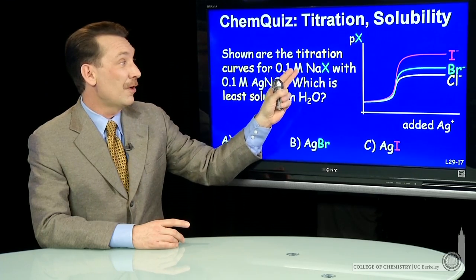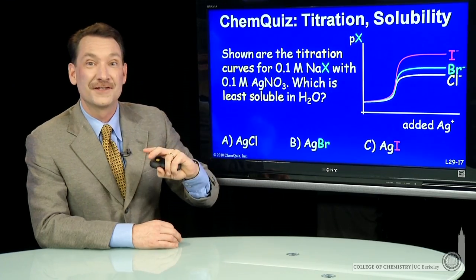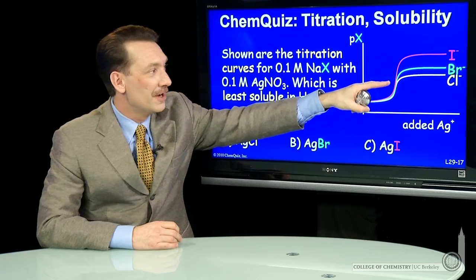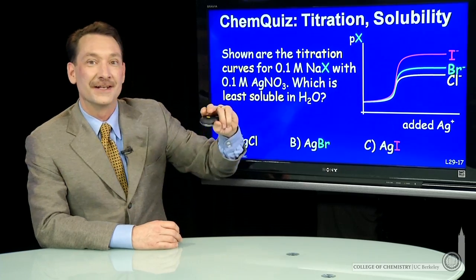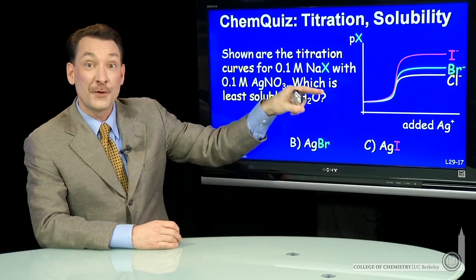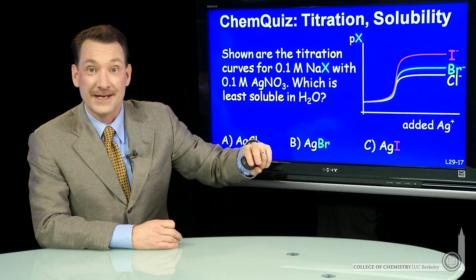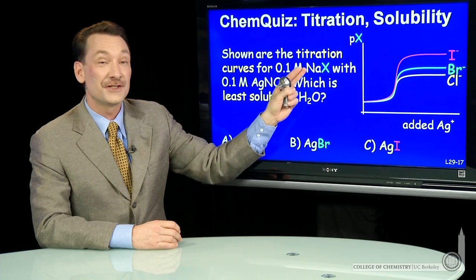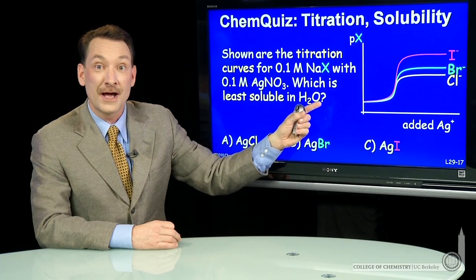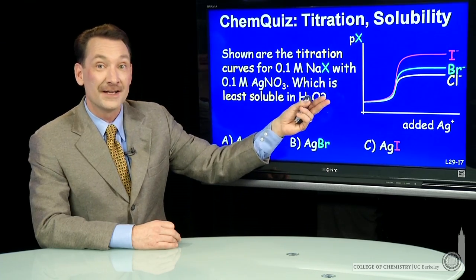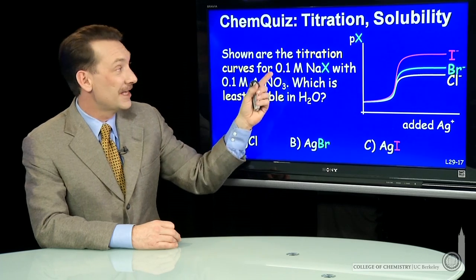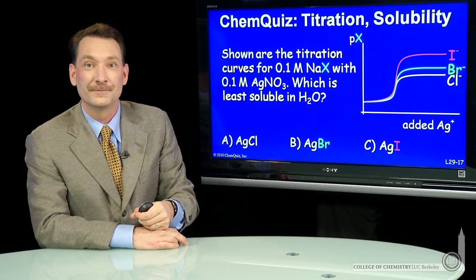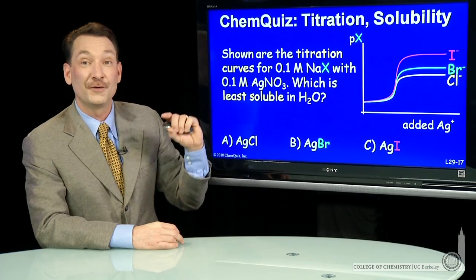I'm going to take 0.1 molar NAX solutions, where X is either chlorine, bromine, or iodine. So sodium chloride, sodium bromide, and sodium iodide are all very soluble. So I'll get 100% dissociation, and I'll have chloride ions, bromide ions, or iodide ions at 0.1 molar in solution. I'm going to add silver nitrate.